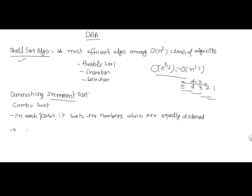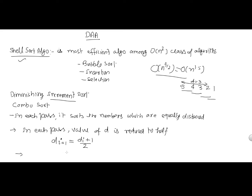In each pass, the value of d is reduced to half. The next value of d is calculated from the formula: d_{i+1} = (d_i + 1) / 2. So if currently d is 3, then for the next pass we calculate (3 + 1) / 2 = 2. This will be the distance for the next pass. The algorithm terminates when d equals 1.